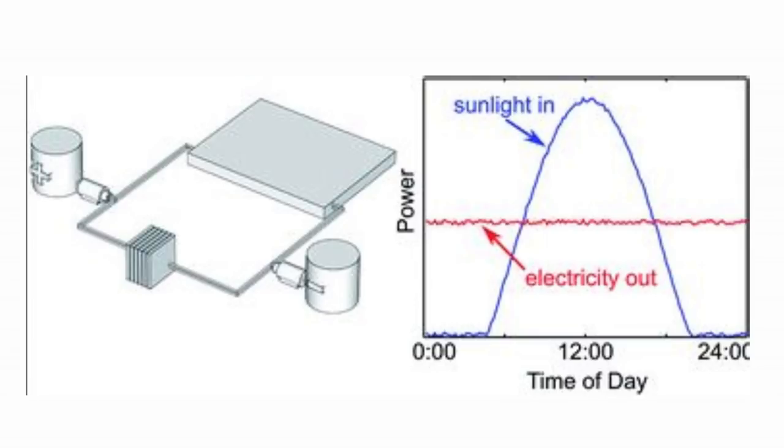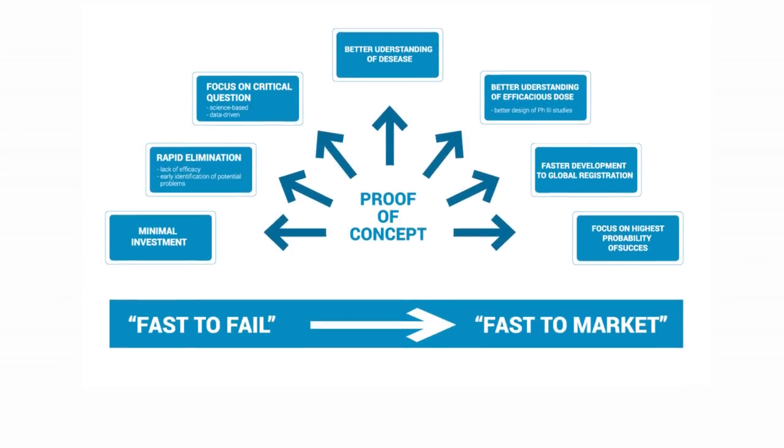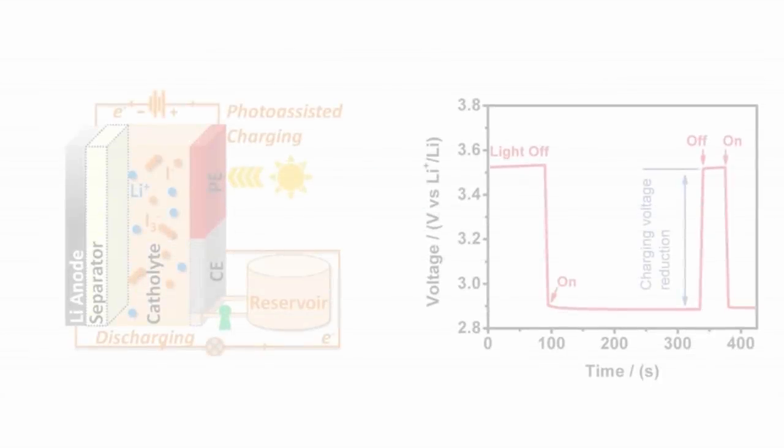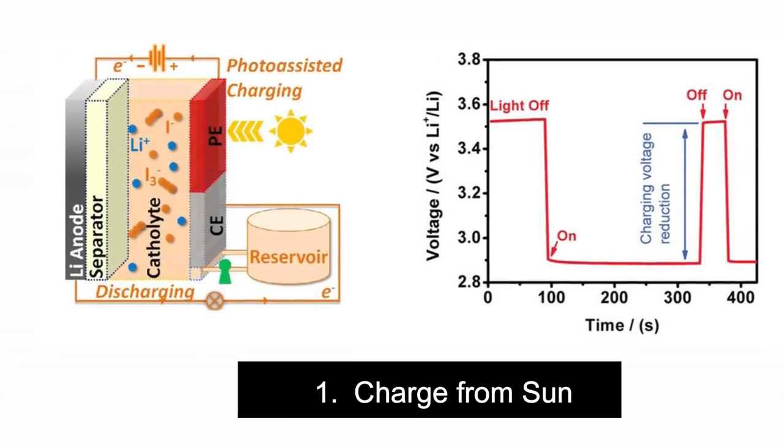As for now, this product has just passed its proof of concept stage. The battery can operate in three different ways. In the first mode, the solar battery can soak up the sun and store it as chemical energy.